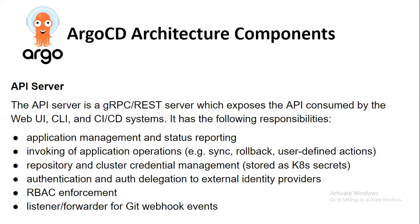The API server is a REST server which exposes the API consumed by the web UI, CLI, and CI/CD systems. Its responsibilities include application management and status reporting, invoking application operations like sync, rollback, and user-defined actions, repository and cluster credential management stored as Kubernetes secrets, authentication and delegation to external identity providers, RBAC enforcement, and acting as a listener/forwarder for git webhook events.